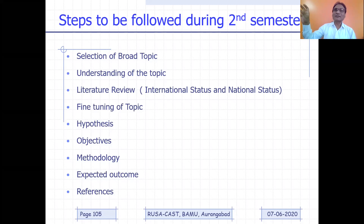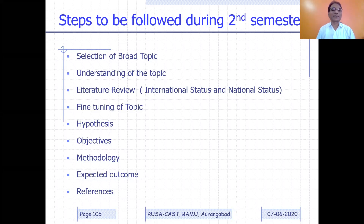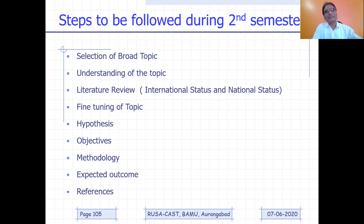Out of the research a professor is working on — say, four different areas — one of the areas would be a broad topic. You need to understand the fundamentals of that topic: the basics from books, literature, research papers, magazines. Try to get yourself aware about that topic. And then next would be literature review.